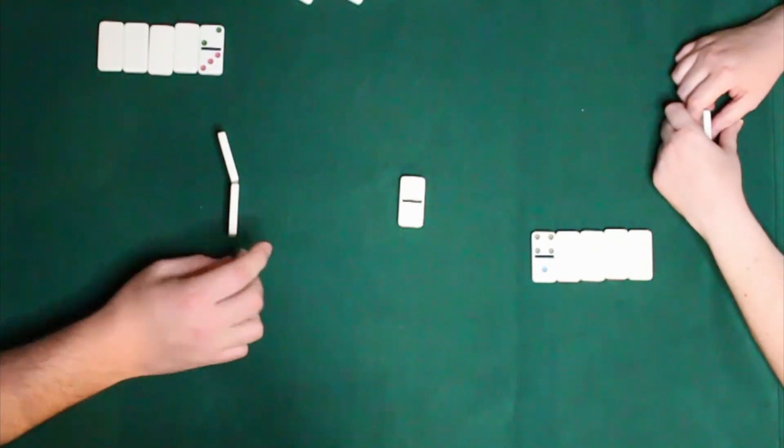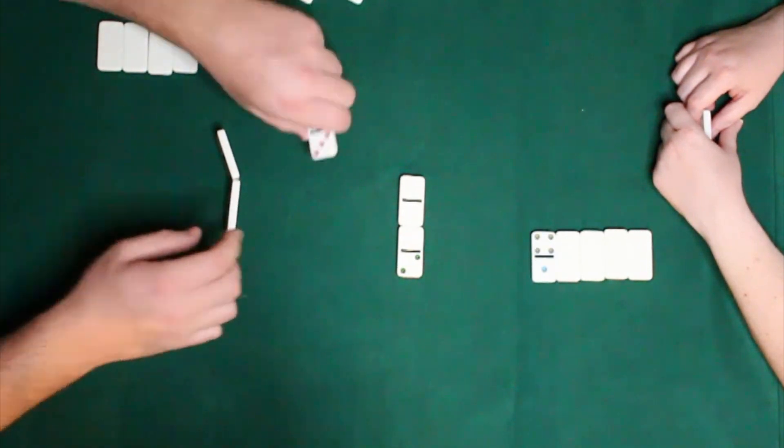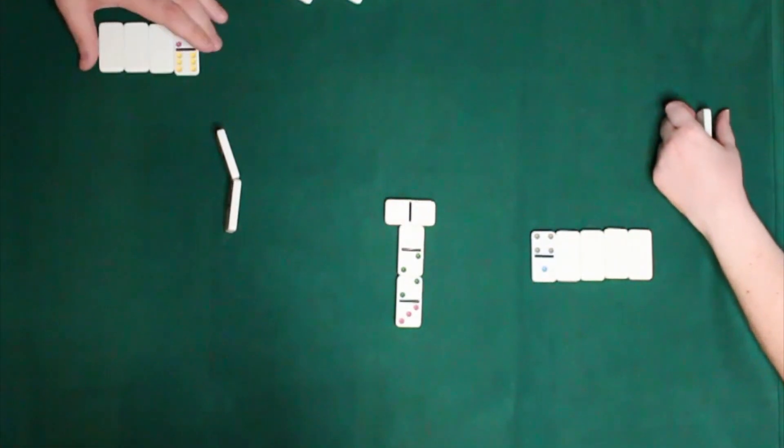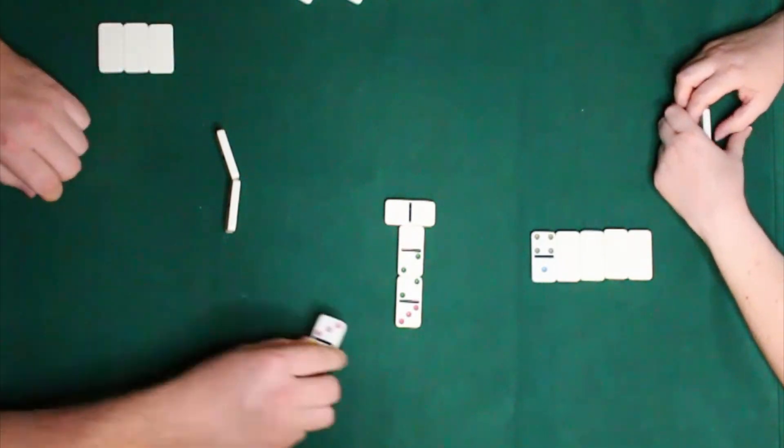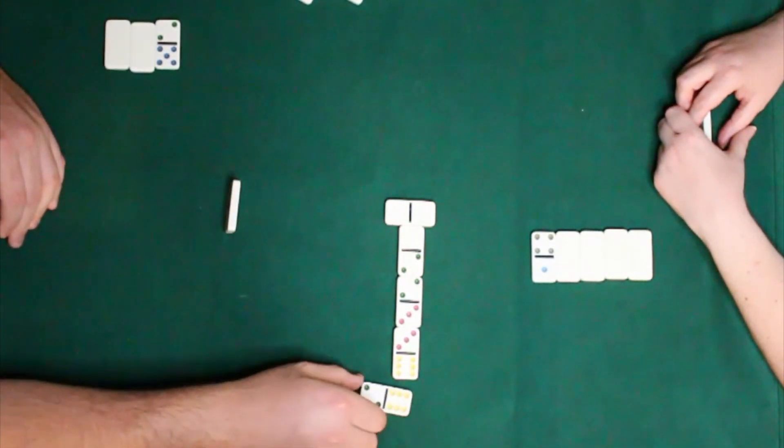So I went ahead and explained this in about five minutes and we were off to playing. It was that quick of a game. We saw we had East put the double blank down and I on the West went ahead and put a blank two, followed by a two-three, followed by a three-six. I'm getting my reserve down pretty well.